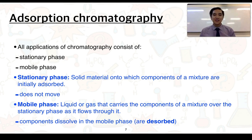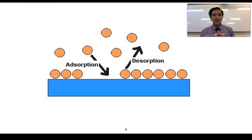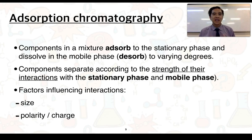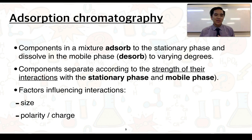Components can dissolve in the mobile phase, or we say they are desorbed. Adsorption is components sticking onto or attaching to the surface of a material, while desorption is the exact opposite — going from the surface into solution. Components in a mixture can adsorb to the stationary phase and desorb into the mobile phase to varying degrees. They separate according to the strength of their interactions with both phases, and the factors that influence these interactions are size, polarity, and charge.